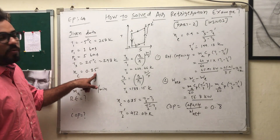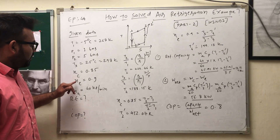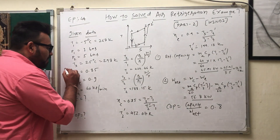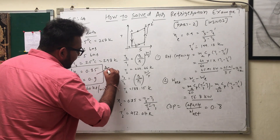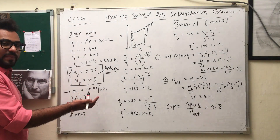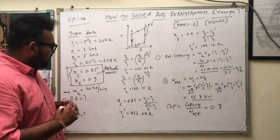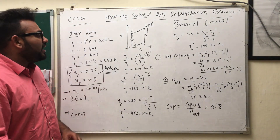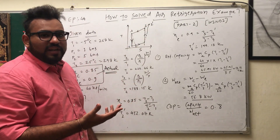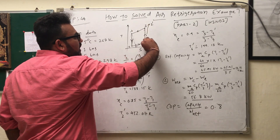The isentropic efficiency of the compressor is 0.85 and the isentropic efficiency of the expander is 0.90. Whenever these efficiencies are given, you should understand that it is talking about the actual cycle, not the theoretical cycle. The mass of air is given as 40 kg per minute. We need to find the refrigerating effect and COP.